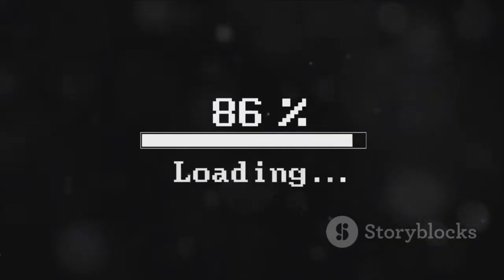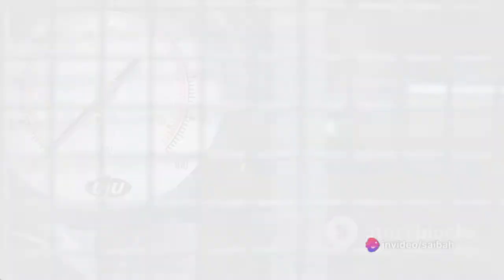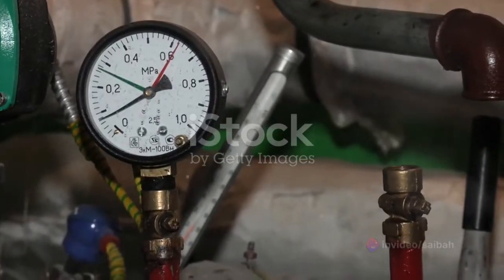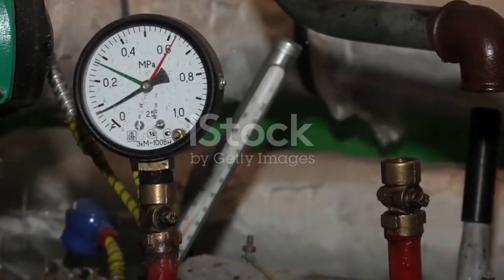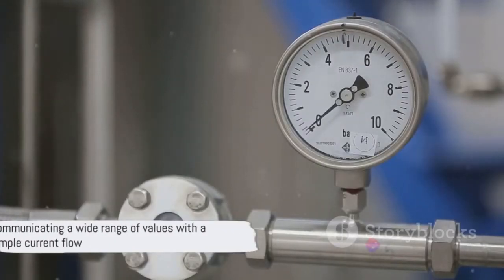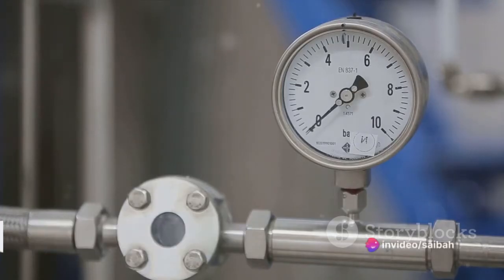The upper limit, 20 milliamps, represents the maximum value of the process variable. This could be anything from temperature, pressure, flow rate, or the level of a liquid in a tank. The beauty of the 4 to 20 mA current loop is its ability to communicate a wide range of values with just a simple current flow.